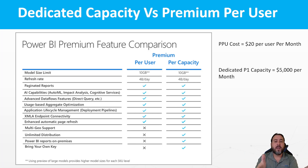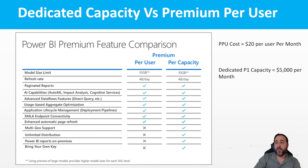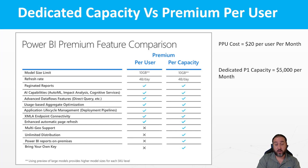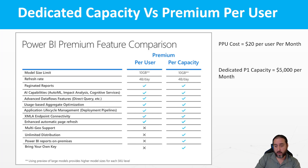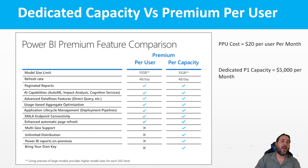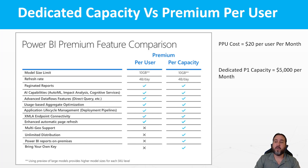We're seeing why premium per user matters — what do we get over the $20 per month versus the $10 for Pro? It's $20 per user per month versus dedicated, which is licensed quite differently.